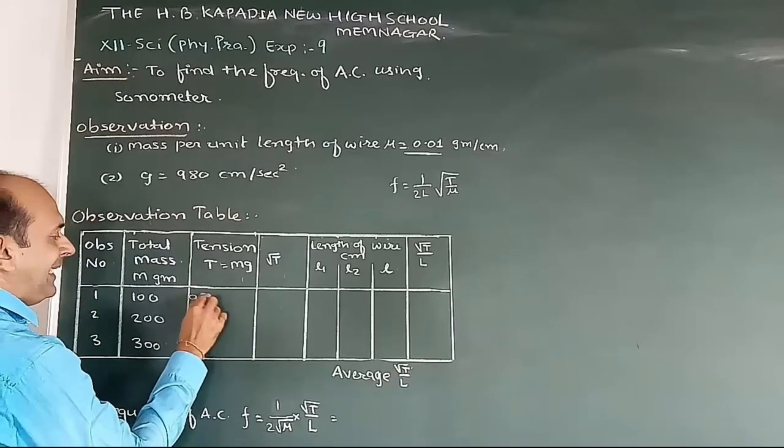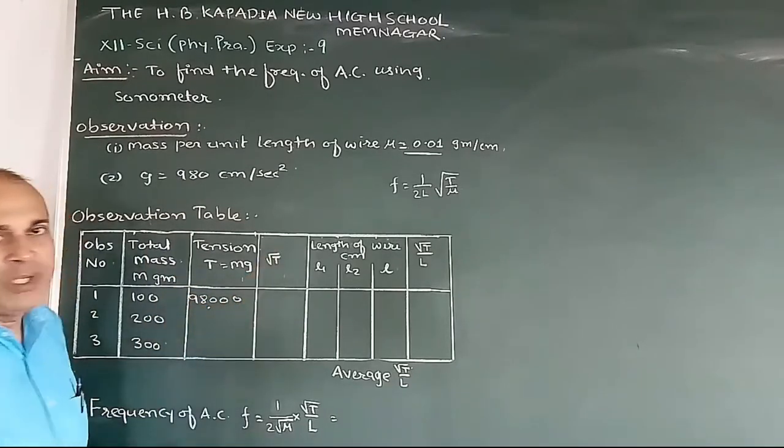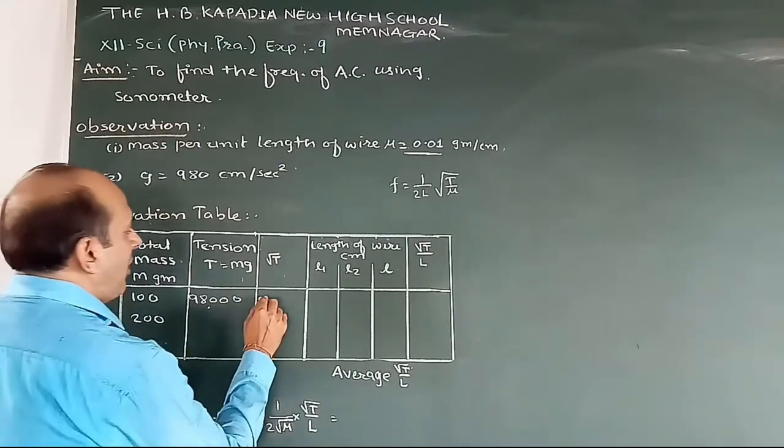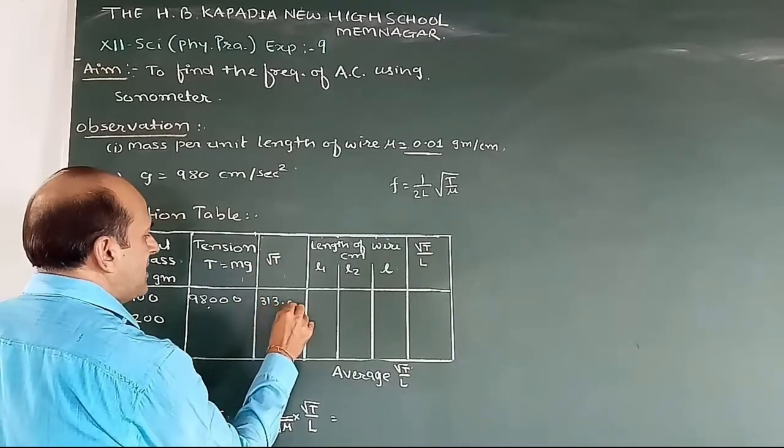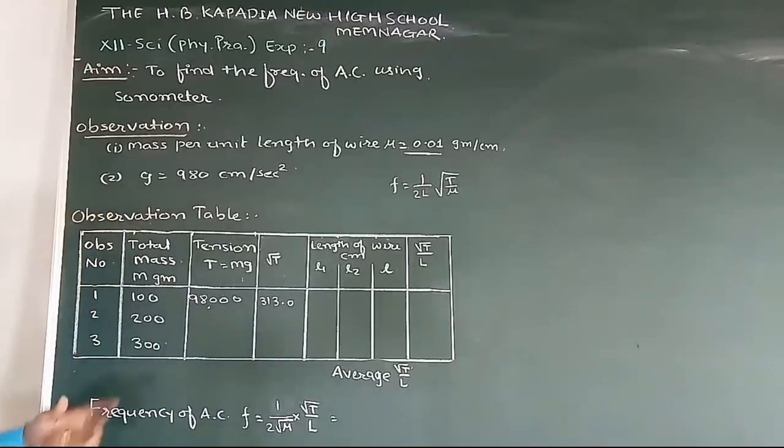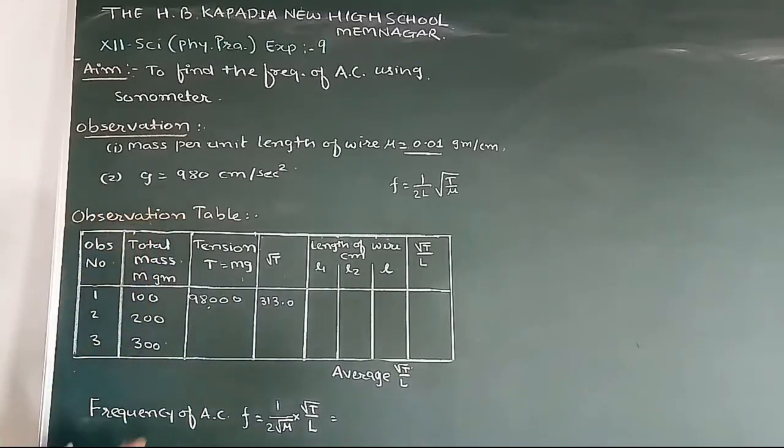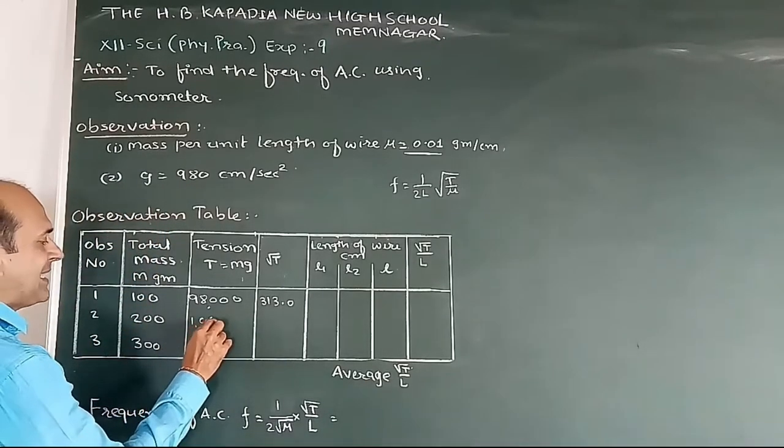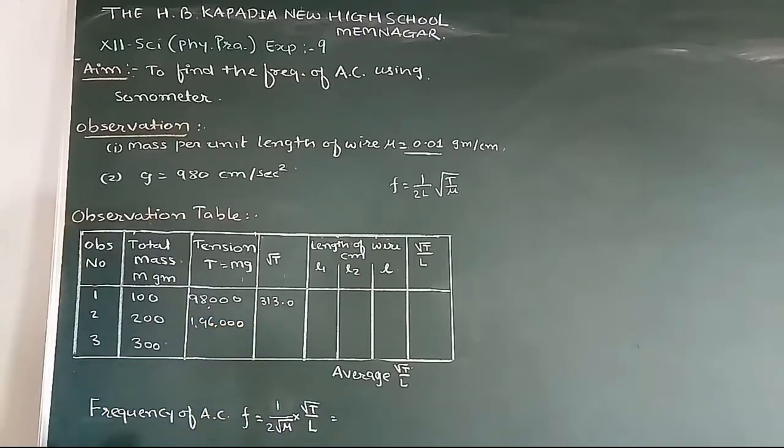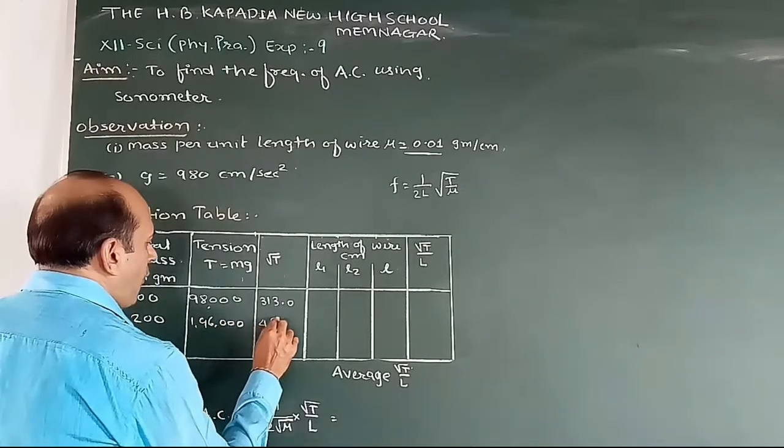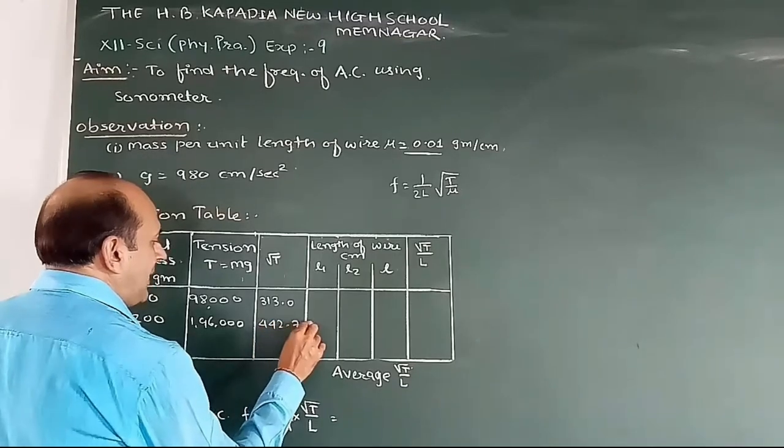The second is 200 times 980, which is 196,000, and its square root is equal to 442.7.